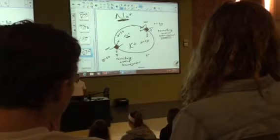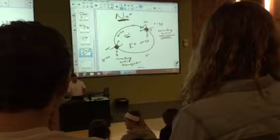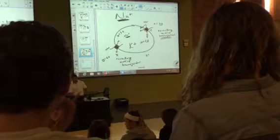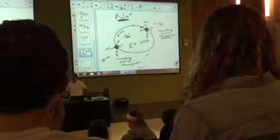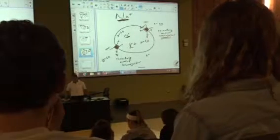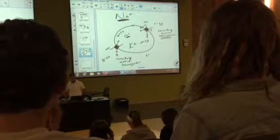What's secondary active transport? It's still an active transport mechanism. Why? Because we're moving some molecule up the gradient. Even though one of them is moving down, it doesn't matter. Something is moving up. So by definition, that's what trumps.